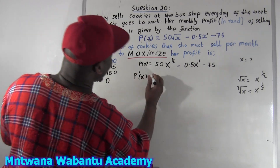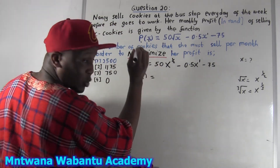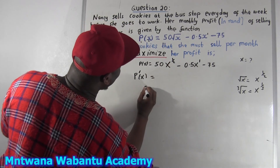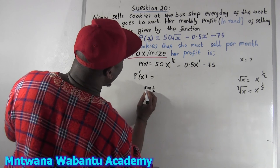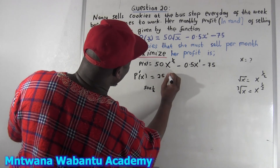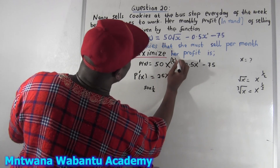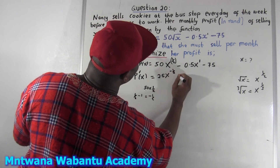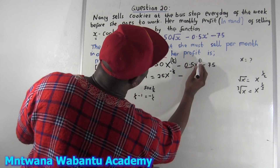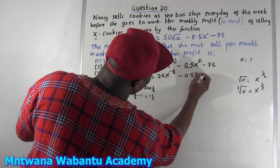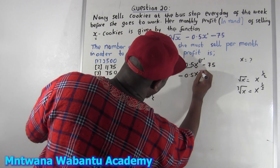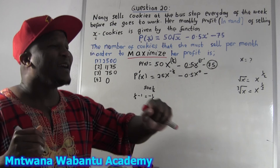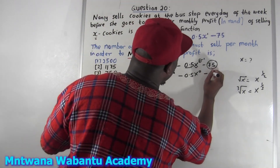The first derivative — P prime — equals: take this number here, multiply by the exponent at the back. We have 50 there, so multiply by one-half. 50 times one-half gives us 25. Write your x, and this exponent becomes one-half minus one, which gives negative one-half. Minus: take 0.5, multiply by the exponent 1 — that gives 0.5 — write x to the power of 1 minus 1, which is x to the zero. And 75, when you differentiate a constant, it becomes zero.